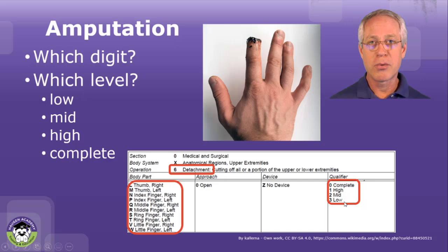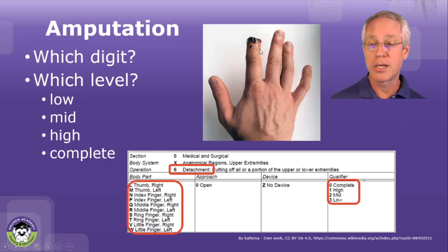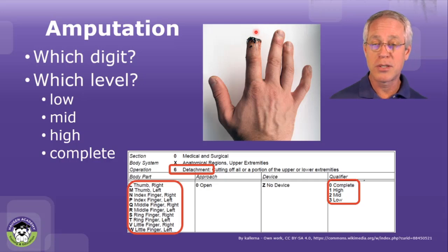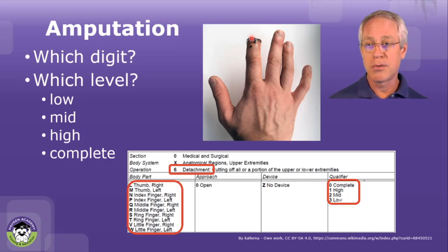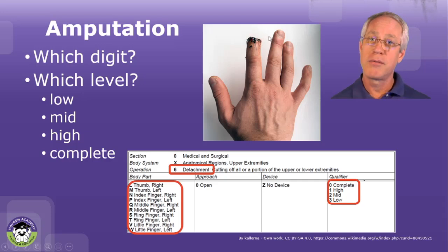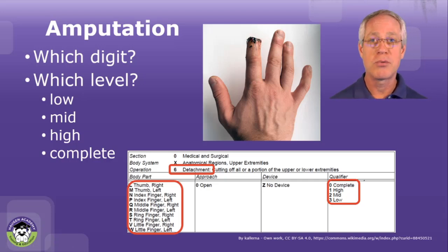We'll never see a ray amputation in this circumstance. Typically, it will be a crush injury to the tip of the finger that's cut back to the distal interphalangeal joint and then closed up. And again, if the documentation supports an amputation, the detachment root operation is your code for that completion amputation.